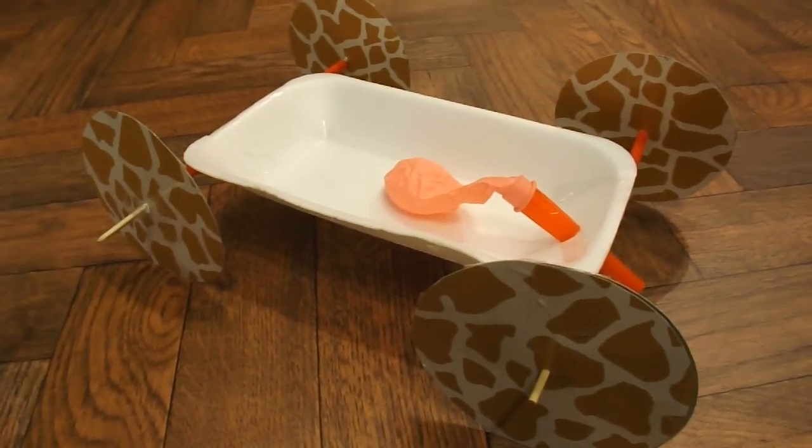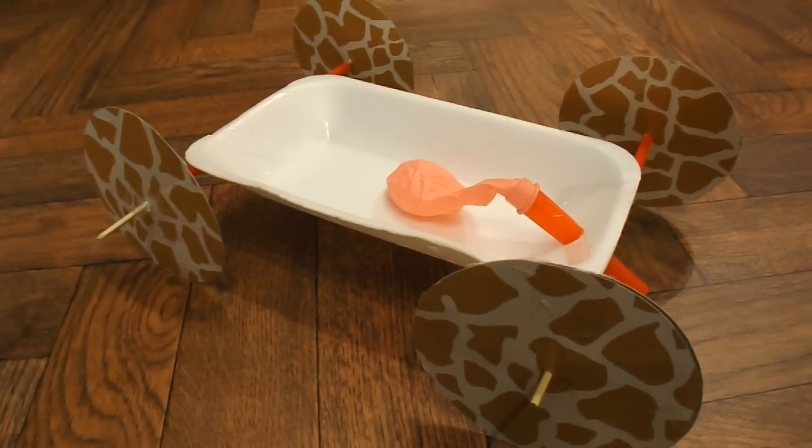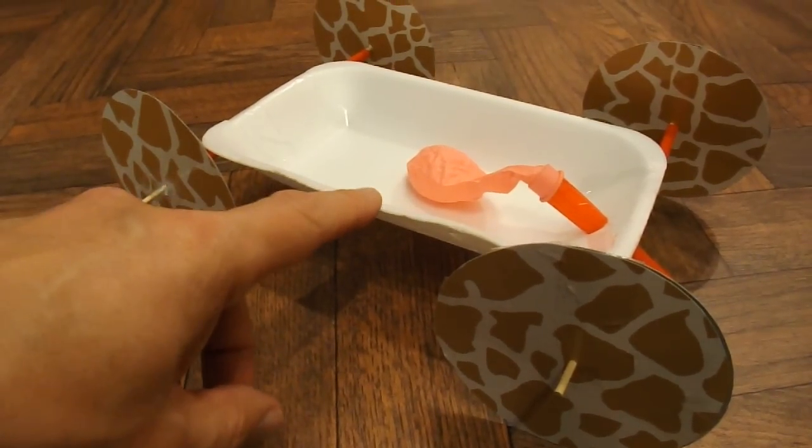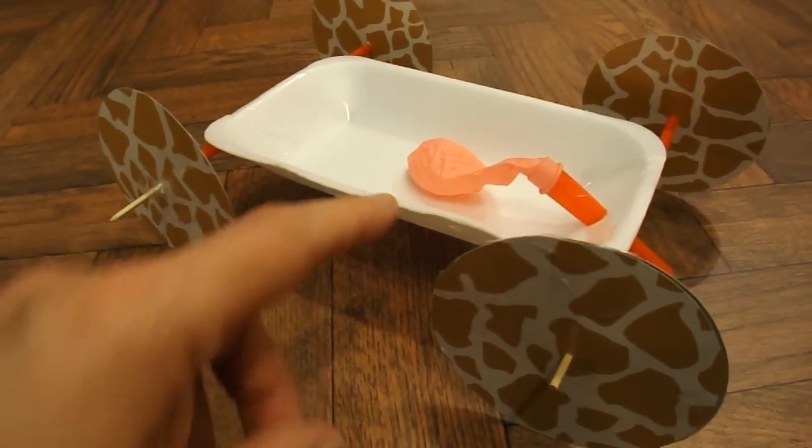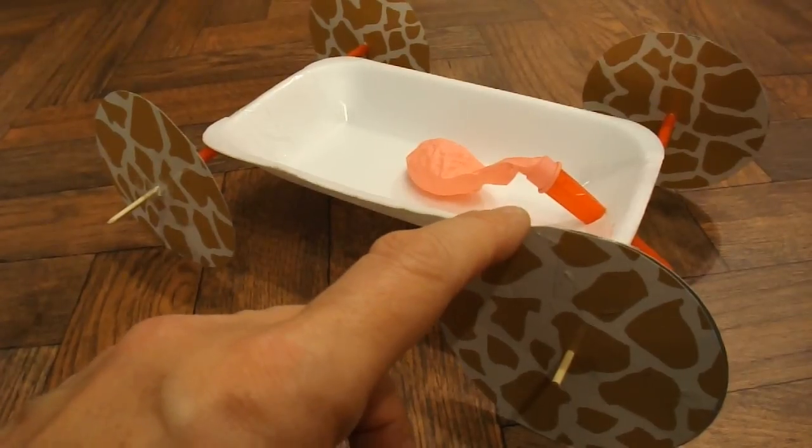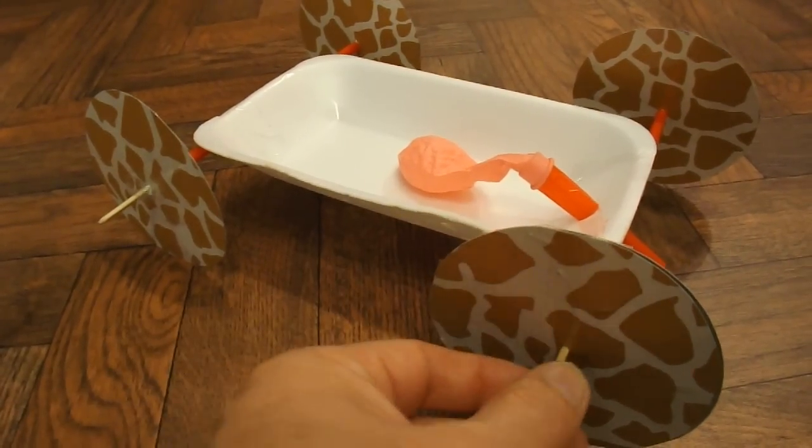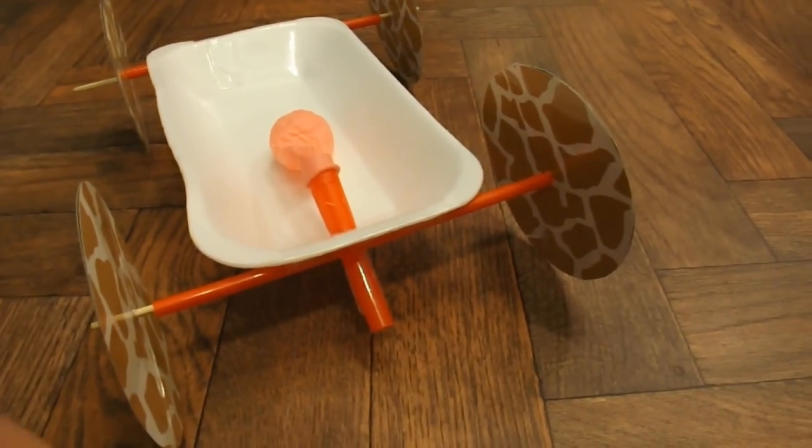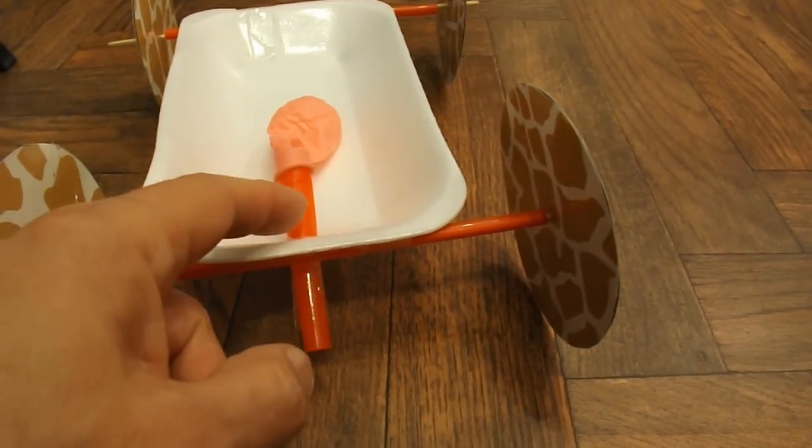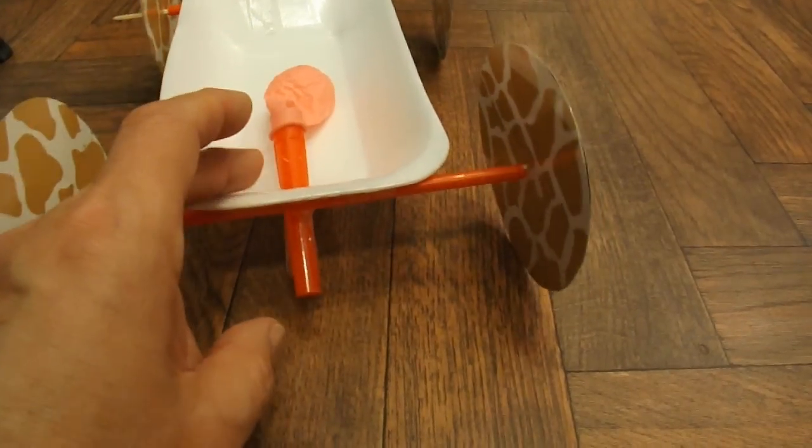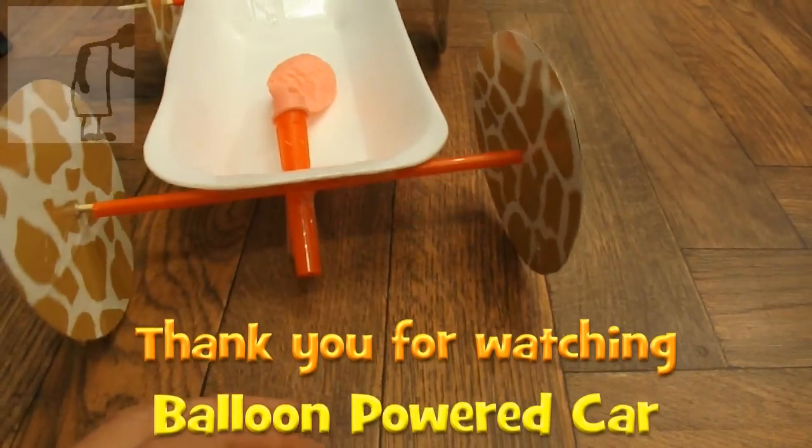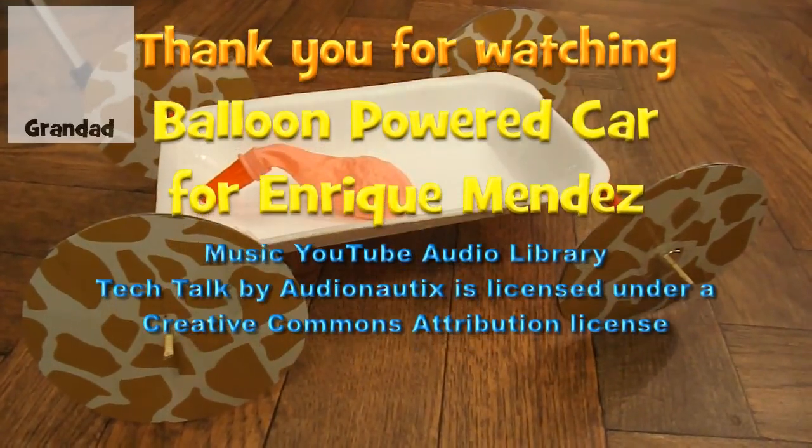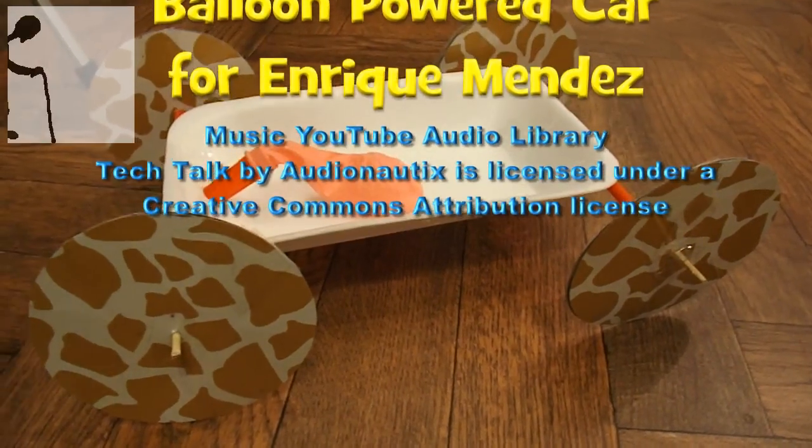Summary time, what have we got? We've got a balloon-powered car made from a styrofoam fast food tray, cardboard wheels or card wheels actually. Barbecue skewers for the axles, drinking straws for the axle tubes, and a bit of plastic tubing to extend the balloon and hold it in place. And that's it. Held together with sticky tape.